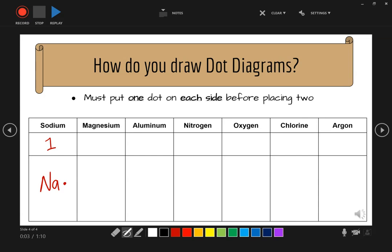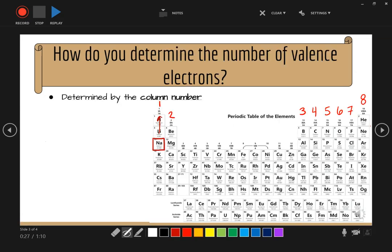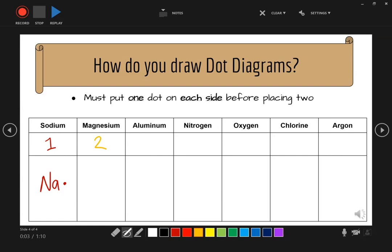Let's do magnesium. So we're going to go to the periodic table. We're going to find magnesium. Magnesium is in column two. So it gets two valence electrons.